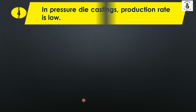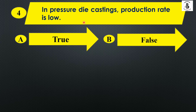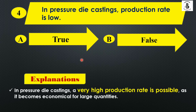Next: In pressure die casting, production rate is low. Option A: true, Option B: false. In pressure die casting, a very high production rate is possible, as it becomes economical for large quantities — it is only feasible with respect to mass production. So the answer is false, Option B.